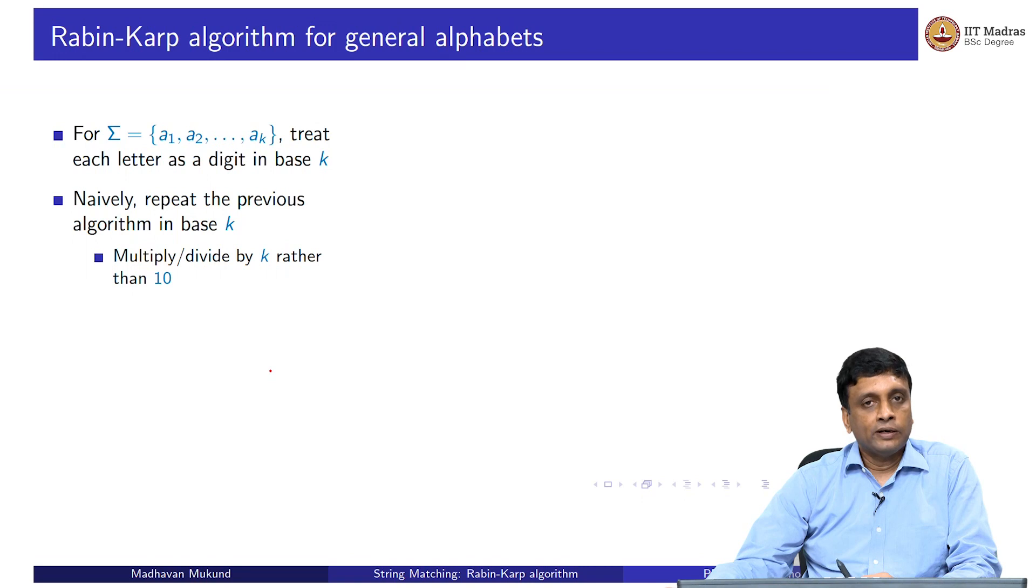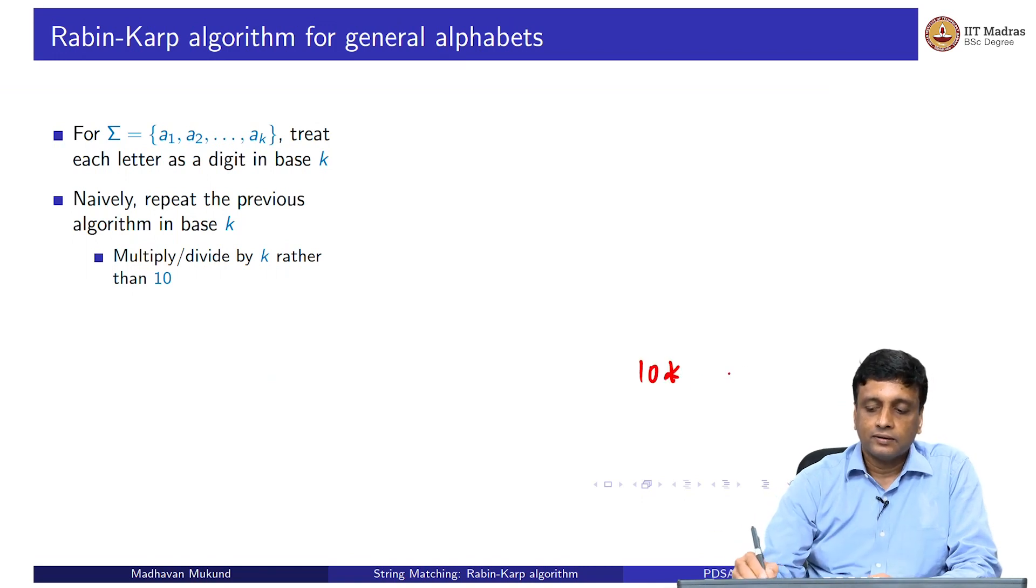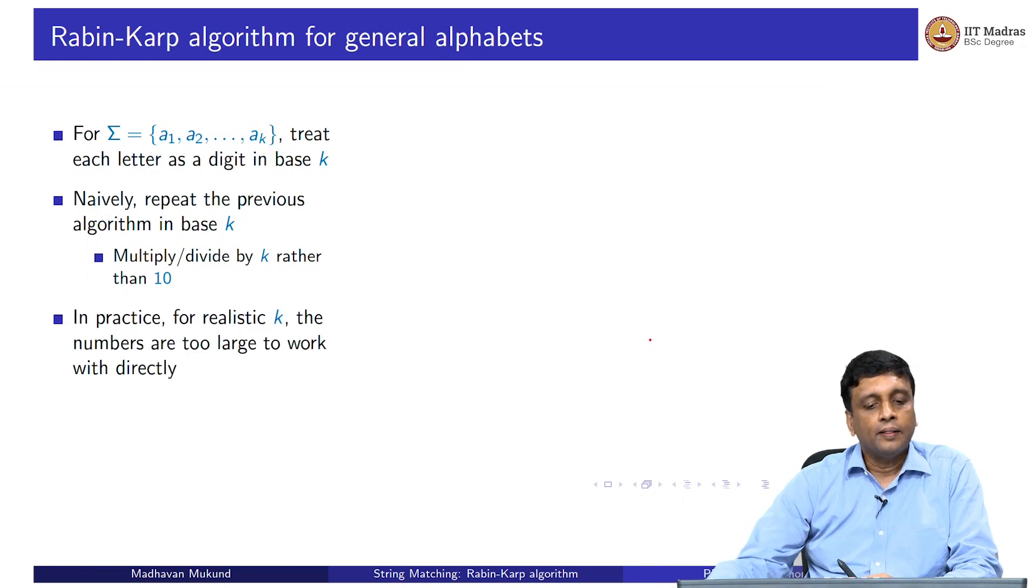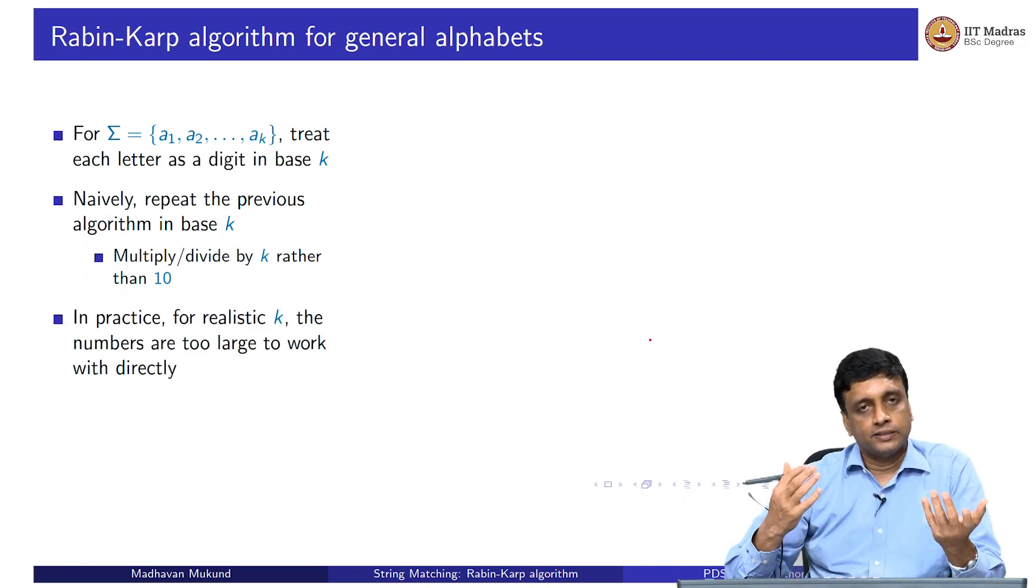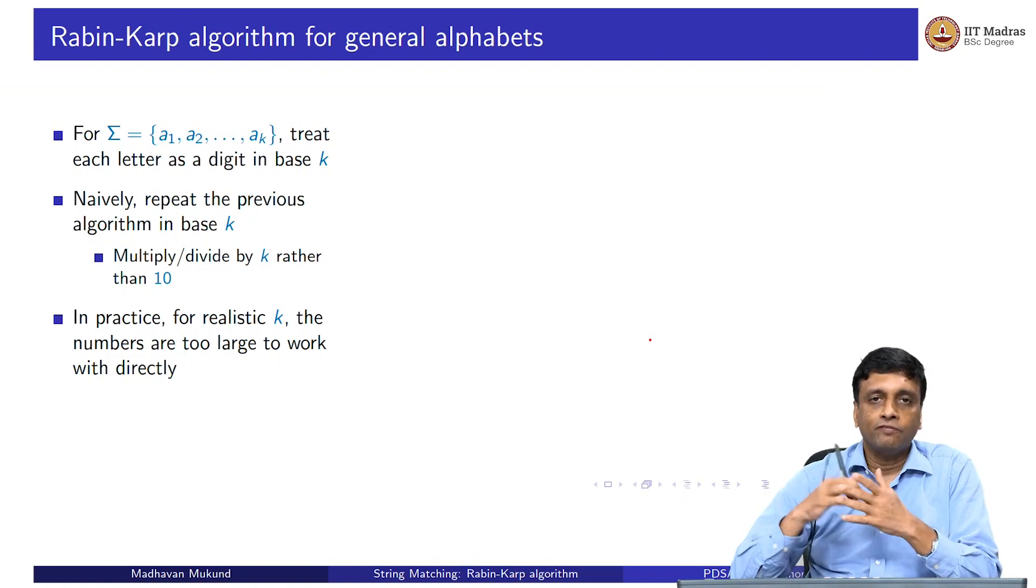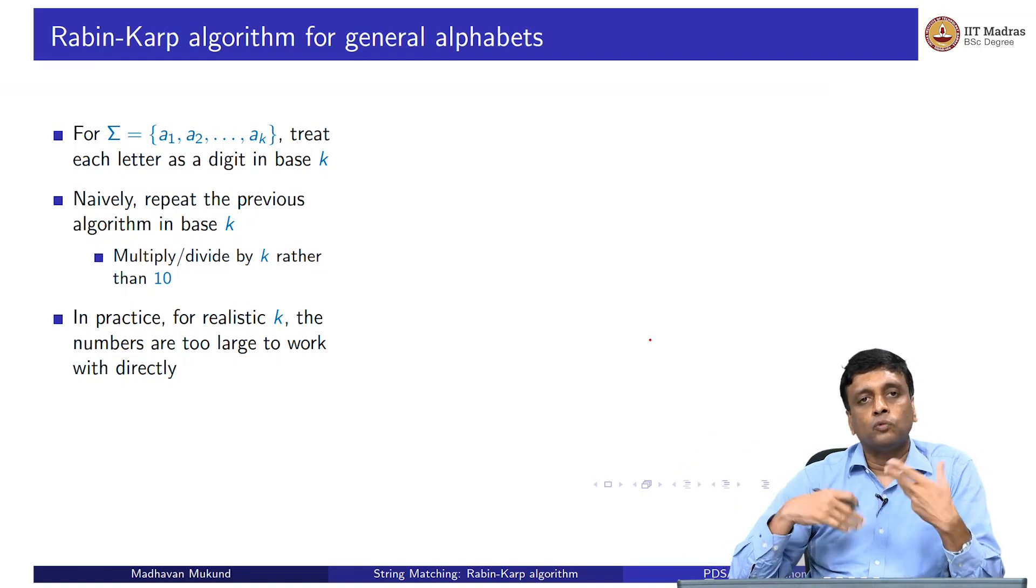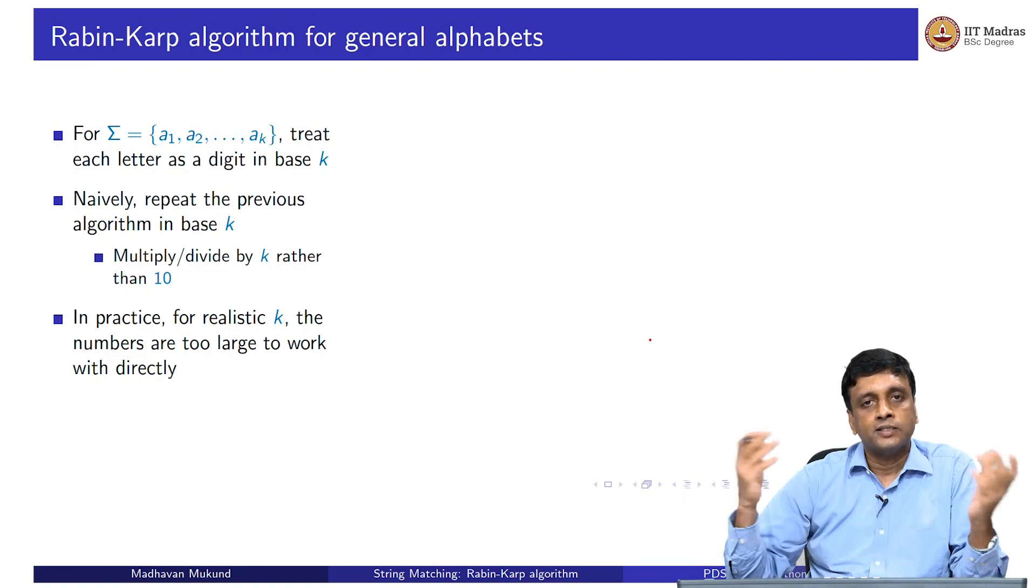This becomes a problem now that we have to do this arithmetic in base k. We can do the arithmetic in base k. Wherever earlier we said 10 times something plus num, 10 times num plus t[i], I can say k times this plus t[i]. If I want to remove the leading digit, I multiply by k raised to the length minus 1. Everything I can do using k instead of 10. But the problem is that this arithmetic will now be very large in terms of the numbers that I have to deal with. The cost that I have saved in going from strings to numbers by not having to do position-by-position comparison is now transferred into the cost of doing this very large precision arithmetic.